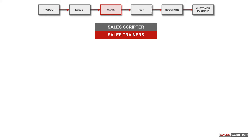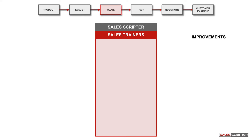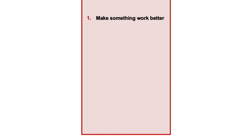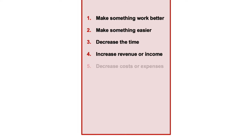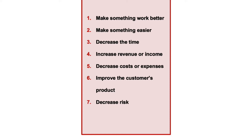The next step is to brainstorm the value that your product or service has to offer. Our goal here is simply to brainstorm between three to six improvements that our product or service can deliver to the target audience. I'm going to give you a checklist to work through: does your product help to make something work better, make something easier, decrease time, increase revenue or income, decrease costs or expenses, improve the product the customer sells, decrease risk, or improve visibility and access to information?